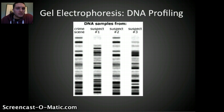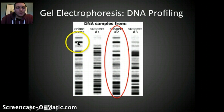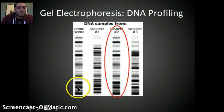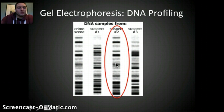Hopefully you've come to the conclusion that suspect two's sequence of bands — their genetic markers — matches with what we see at the crime scene. Right here these two line up very specifically; the bands match with one another. Using this DNA profiling, we could for sure eliminate suspect three and suspect one. Suspect two would be a strong indication that they were involved or guilty of whatever happened at this crime scene.